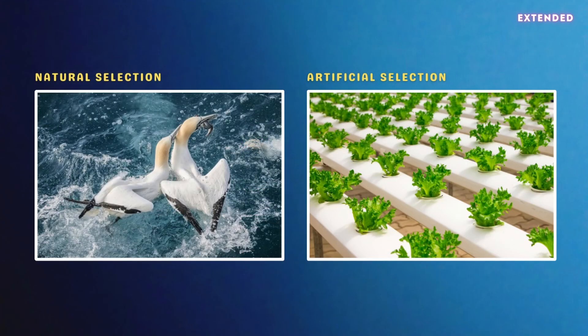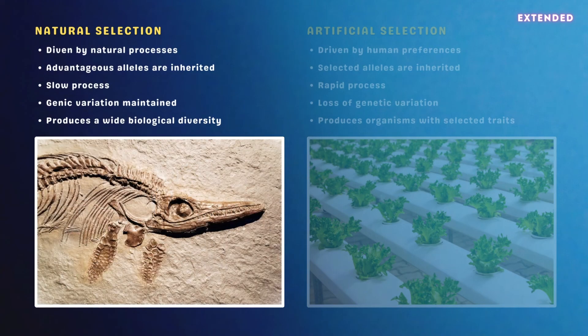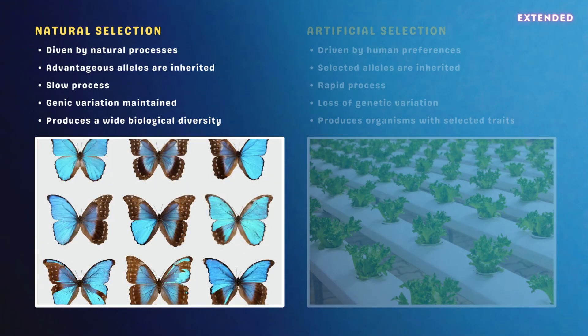Finally, you need to outline the differences between natural and artificial selection. Natural selection, as the name suggests, is driven by natural processes, whereby the best adapted organisms are more likely to survive and pass on their alleles. It's gradual, meaning changes occur over an extremely long period of time, and it helps to maintain genetic variation within a population.